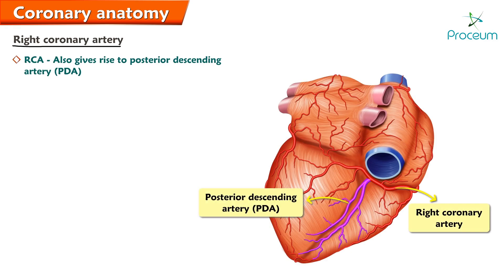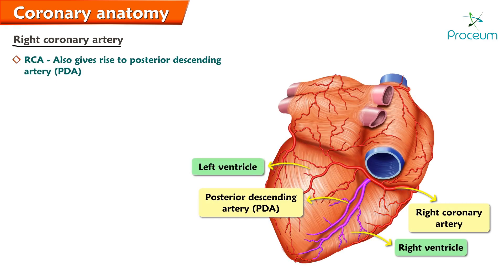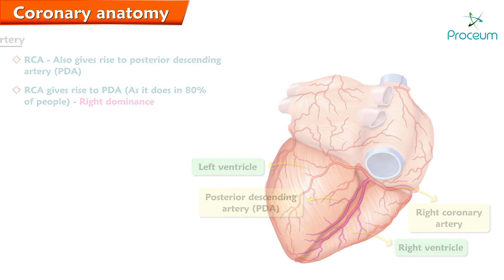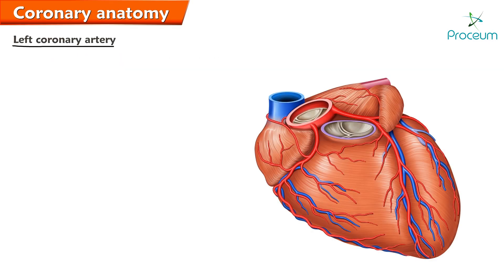In most people, the RCA also gives rise to the posterior descending artery, or PDA. This artery courses between the two ventricles posteriorly and supplies the posterior region of the interventricular septum as well as some of the posterior right and left ventricles. When the RCA gives rise to the PDA, as it does in about 80 percent of people, this is known as right dominance.